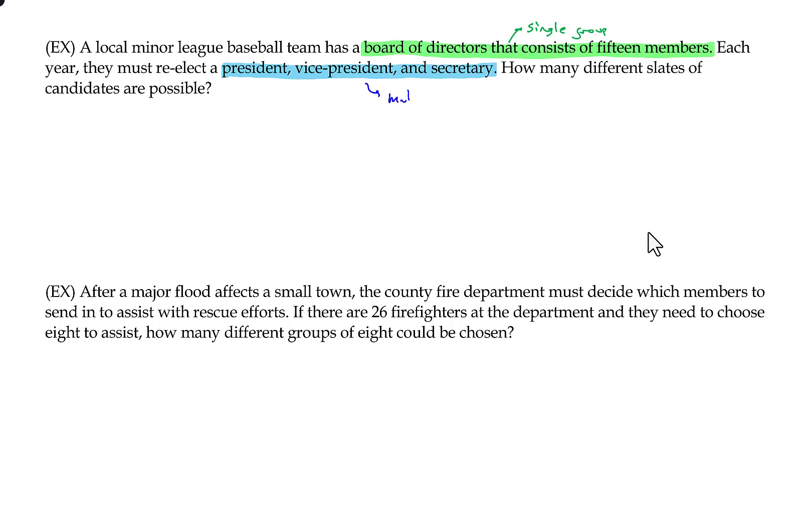So we're picking multiple items from a single group. Now anytime we're picking multiple items out of a single group we're either using a permutation or a combination. So we just have to decide from context which one is the case. Now technically in a permutation order is important and in a combination order is not important. But one thing that is always a giveaway, like here we're choosing a president, vice president, and secretary. So we're making a distinction among the chosen objects. And anytime we make a distinction among the chosen objects, that's a permutation. So this is a permutation of 15 items taken three at a time.